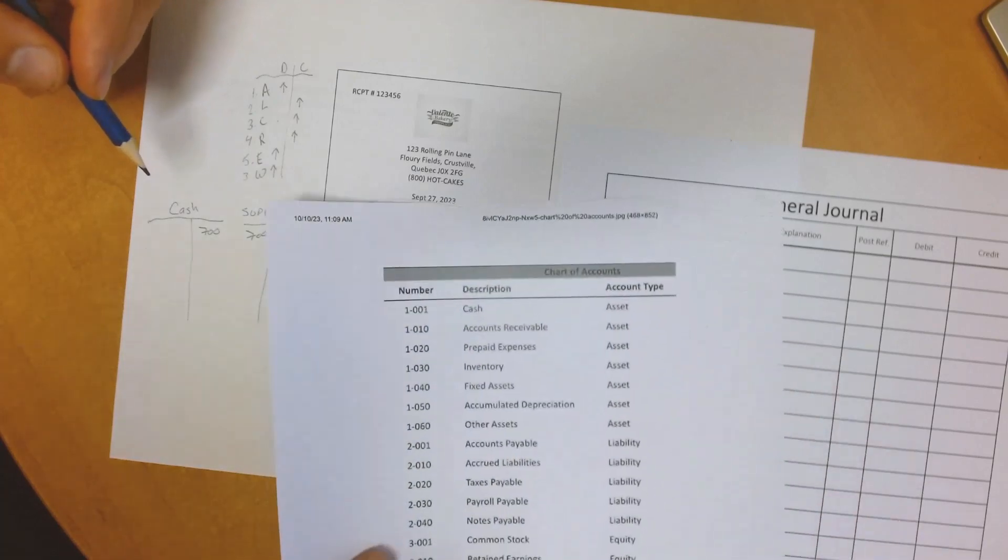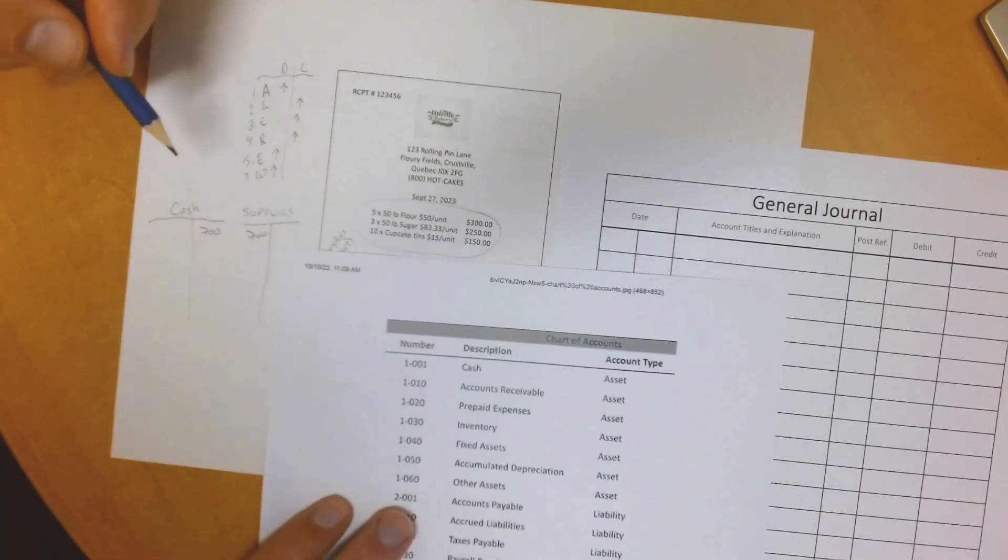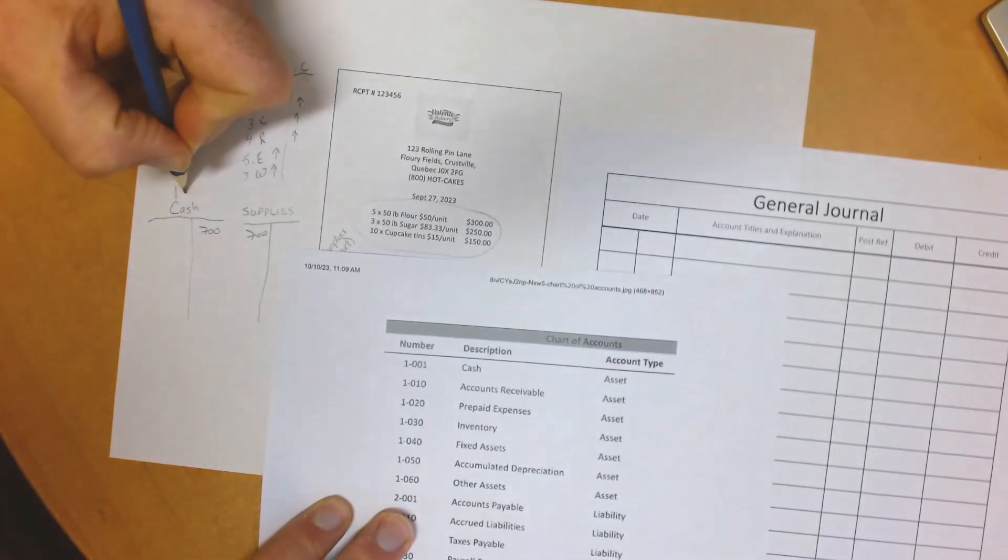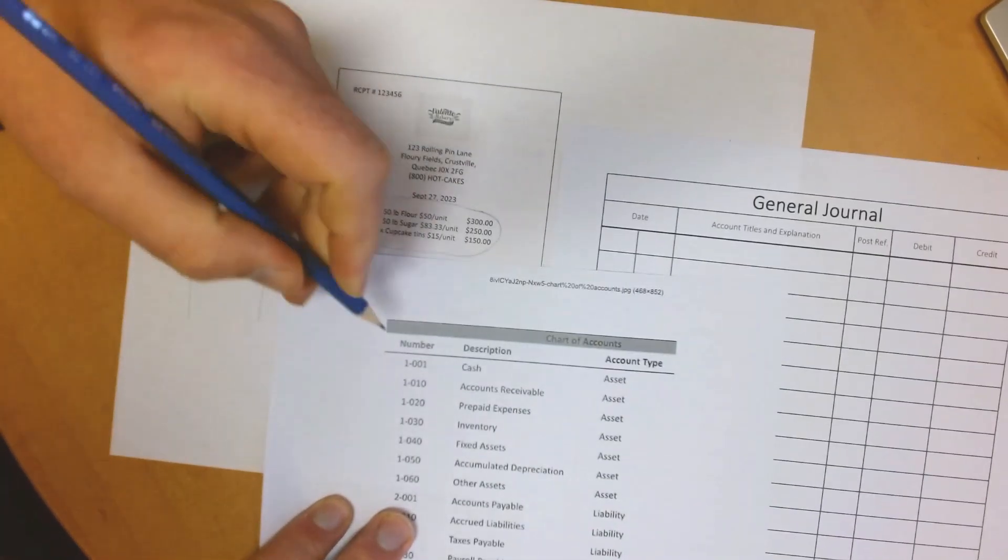Using our chart of accounts, we will have to find account numbers associated to each of the affected accounts. We can put the number for each account right above the T-account for future reference.